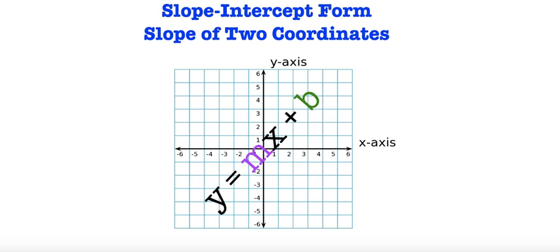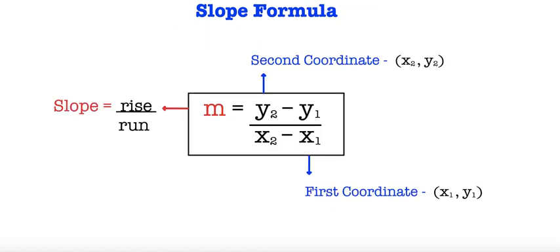Hello mathematicians. Today we're going to be using two coordinates to find slope and then from that we're going to be writing a linear equation in slope intercept form. So here I have the slope formula. We know that in math slope is represented by the variable m, and slope is our rise over run, so we want to know our rate of change. In order to do so we have to take two coordinates and see how much the y changes by and the x changes by.